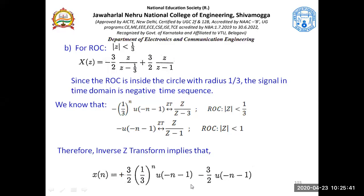The key thing to understand here is: in the previous case the ROC was outside the circle, so it was a positive time exponential. Here it is inside the circle, so we get negative time sequences.